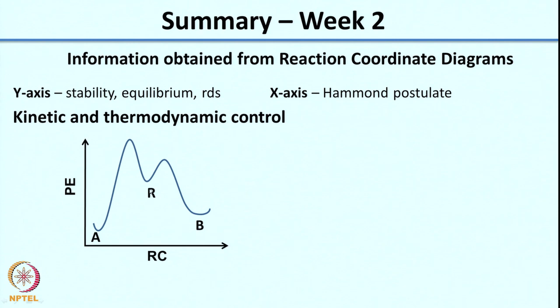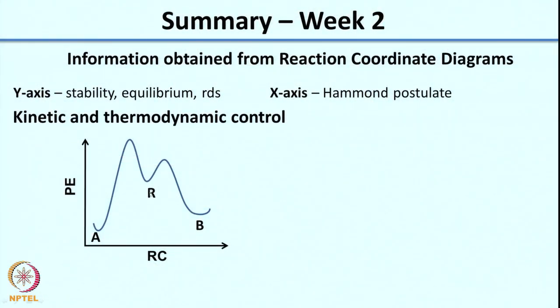We looked at the Hammond postulate to determine whether the transition state resembles the reactant, the product, or an intermediate, and certain implications of how we can control reactions. One example was kinetic and thermodynamic control, where a reactant R can give product A or product B. Product A has a higher activation energy but is more stable, whereas product B is less stable and has a lower activation energy. So B is formed faster but A is more stable. Under kinetic control, B is the major product; under thermodynamic control, A is the major product.